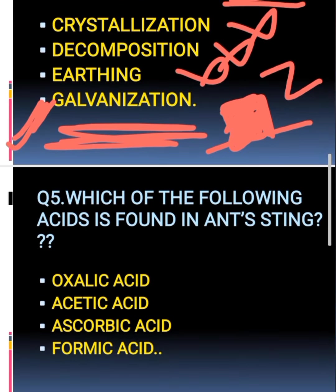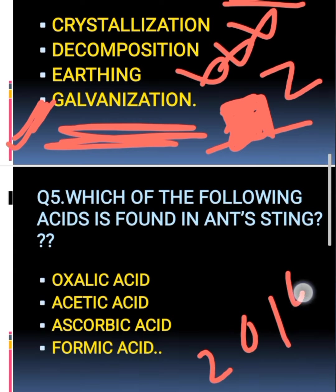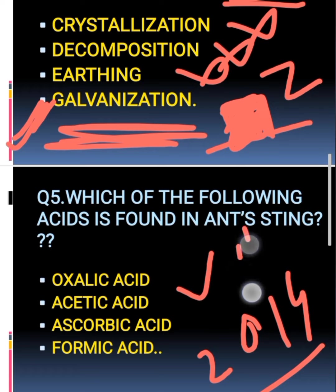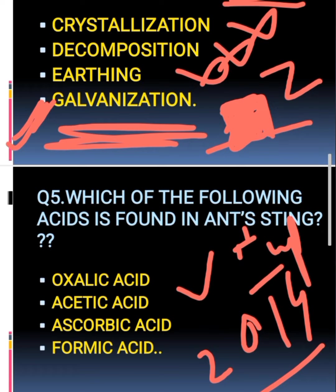The fifth question: which of the following acid is found in ant sting? This is a very important and repeated question. The acid found in ant sting is formic acid.